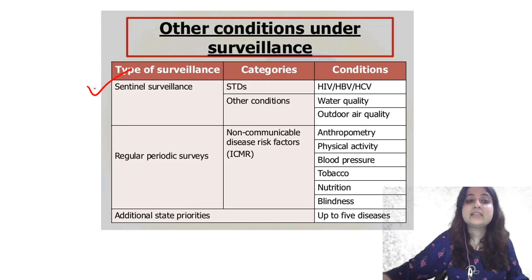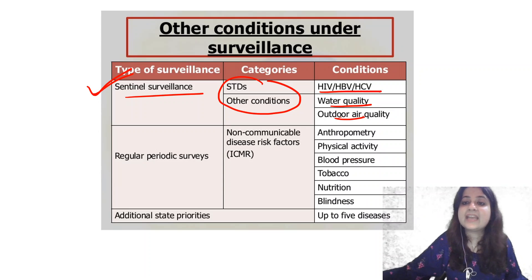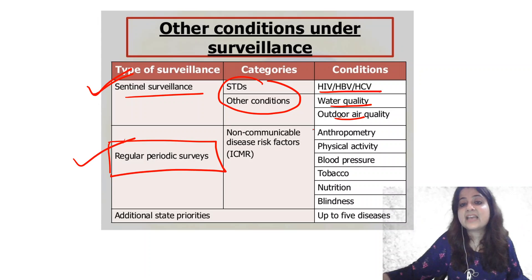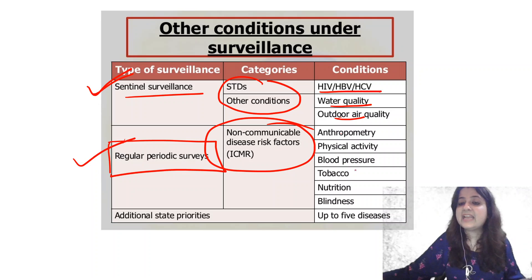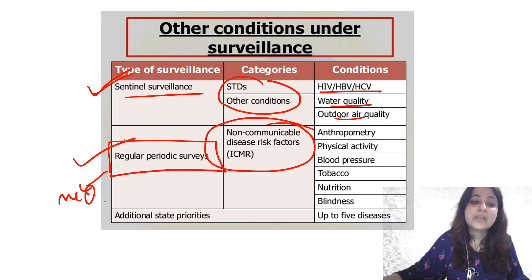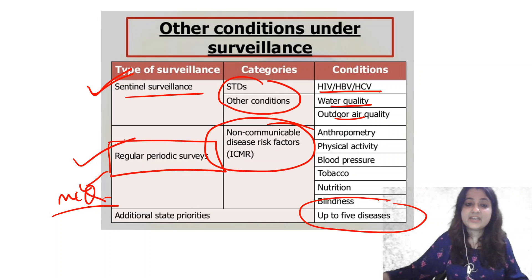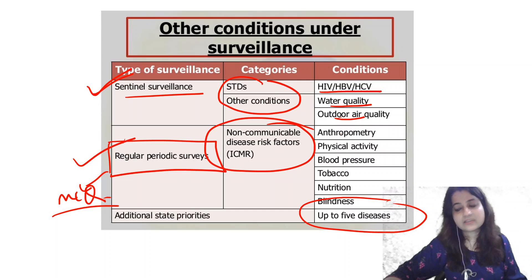There is also sentinel surveillance, covering diseases like STDs, HIV, HBV, and HCV, as well as water quality and outdoor air quality. Under regular periodic surveys, non-communicable risk factors are tracked — anthropometry, physical activity, blood pressure, tobacco, nutrition, and blindness. All states have been given additional priority to include five diseases under IDSP.